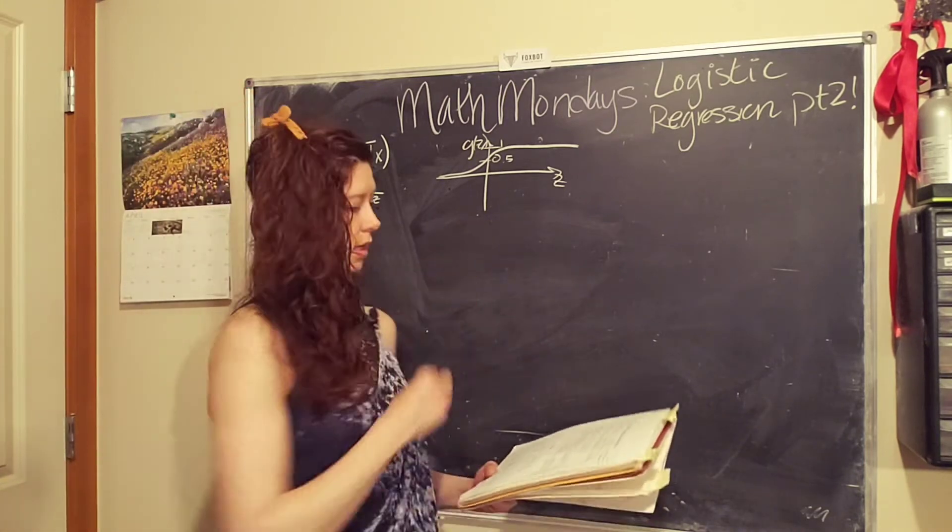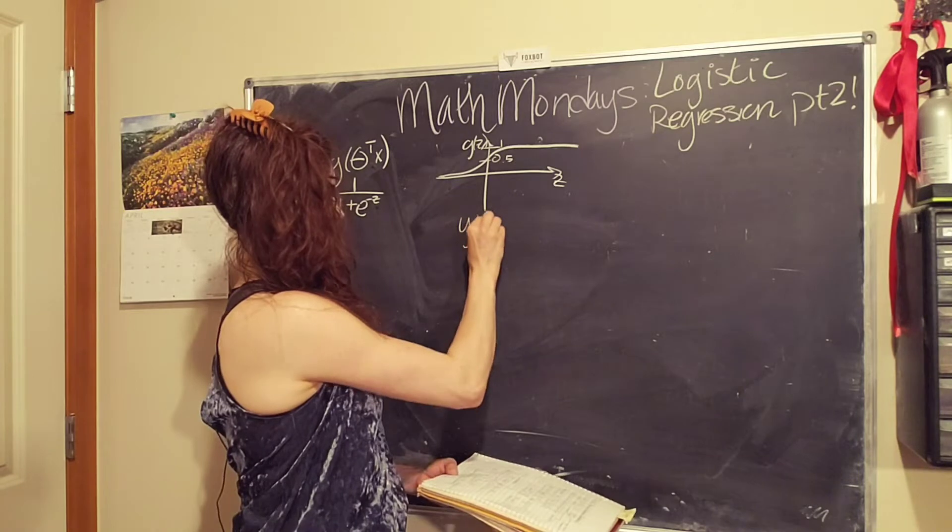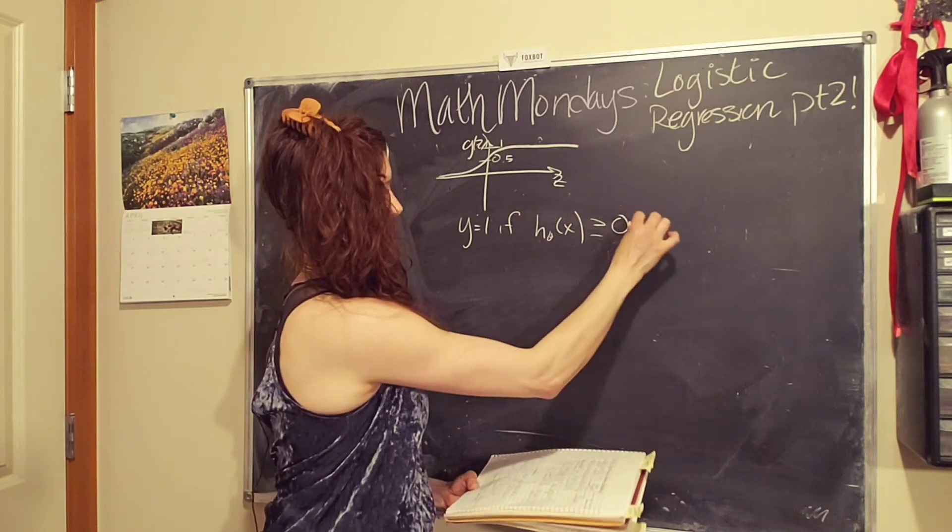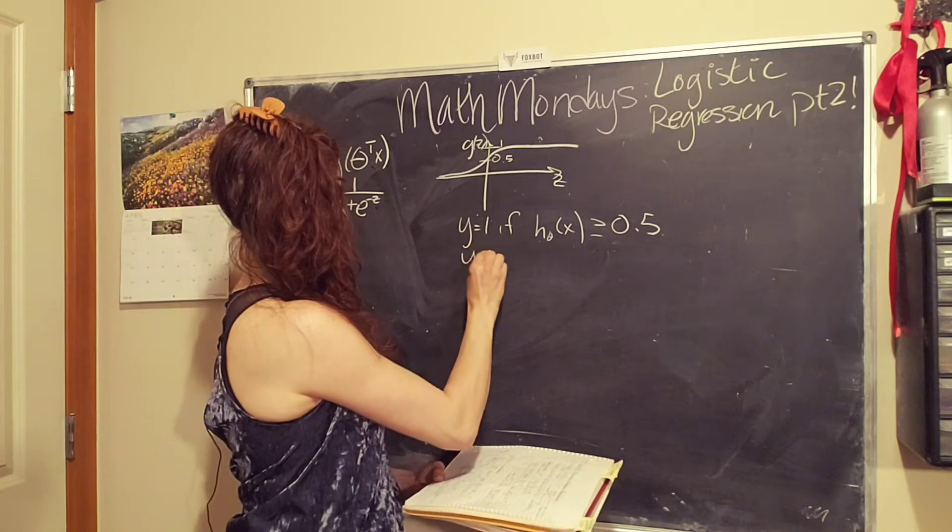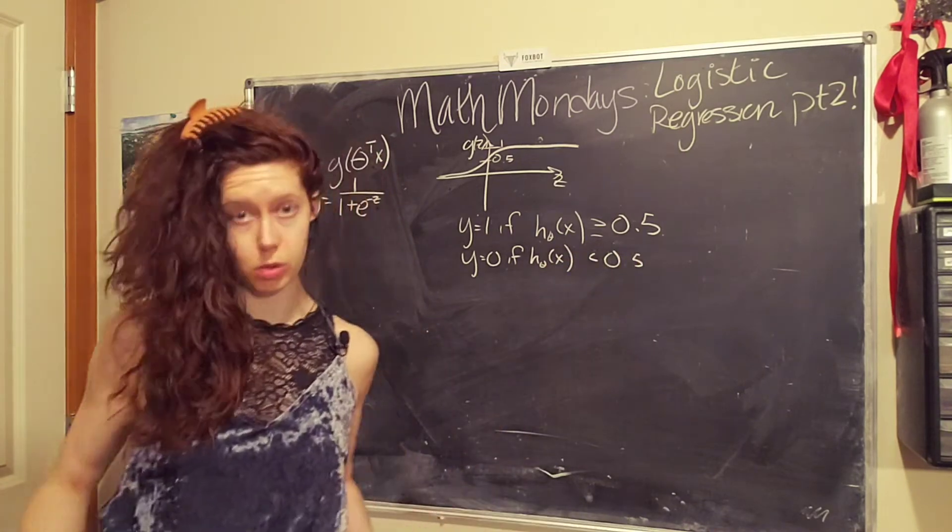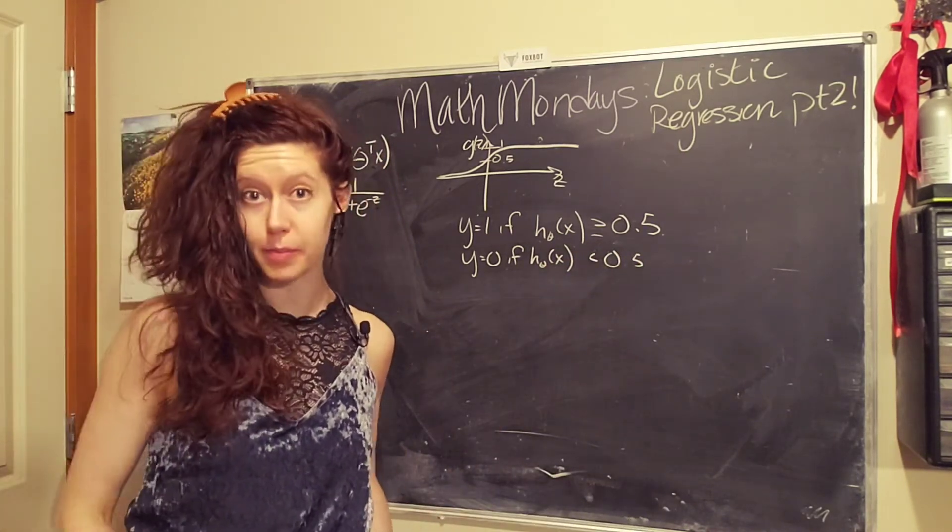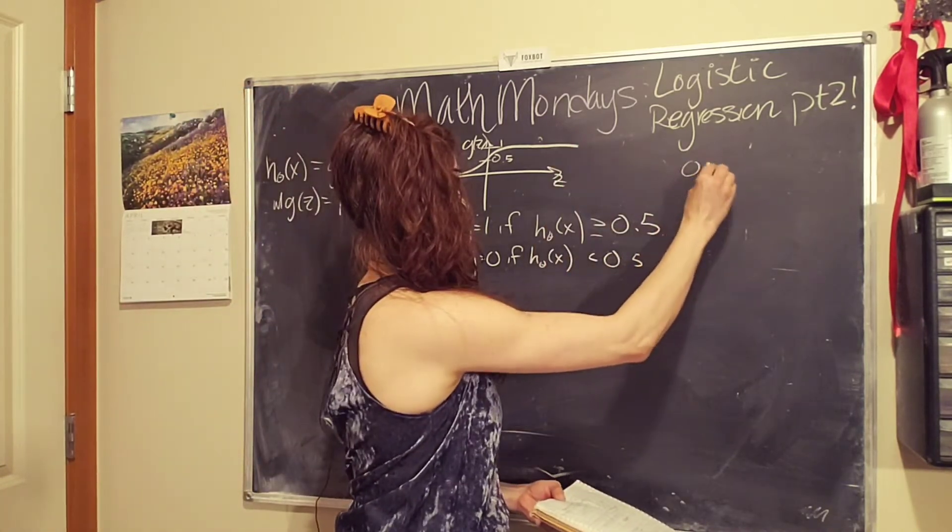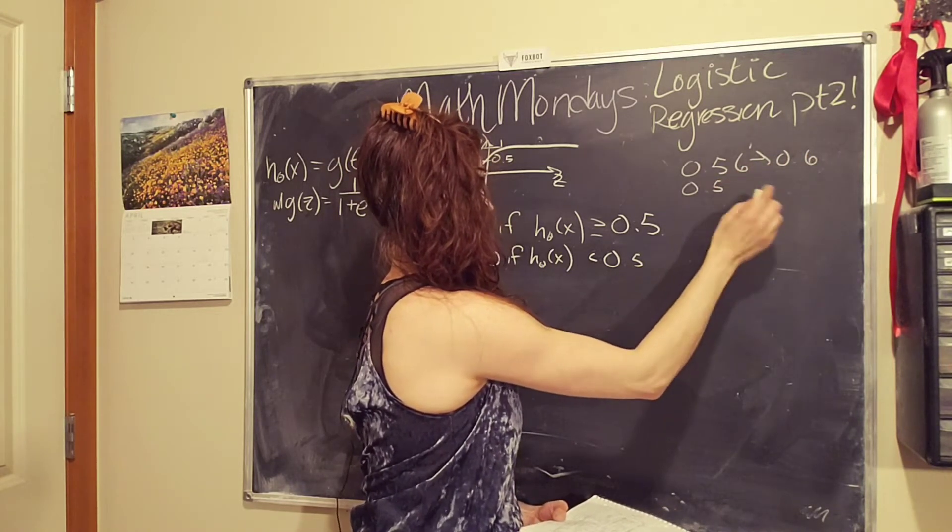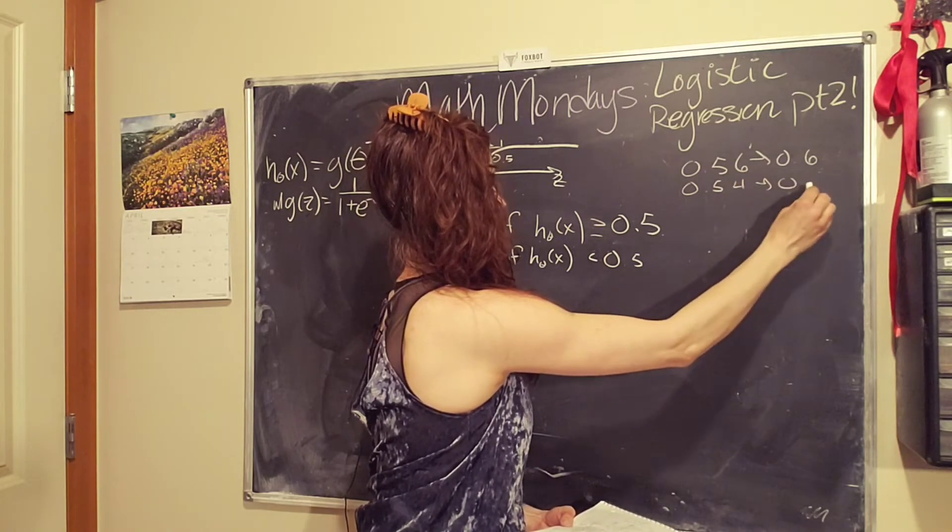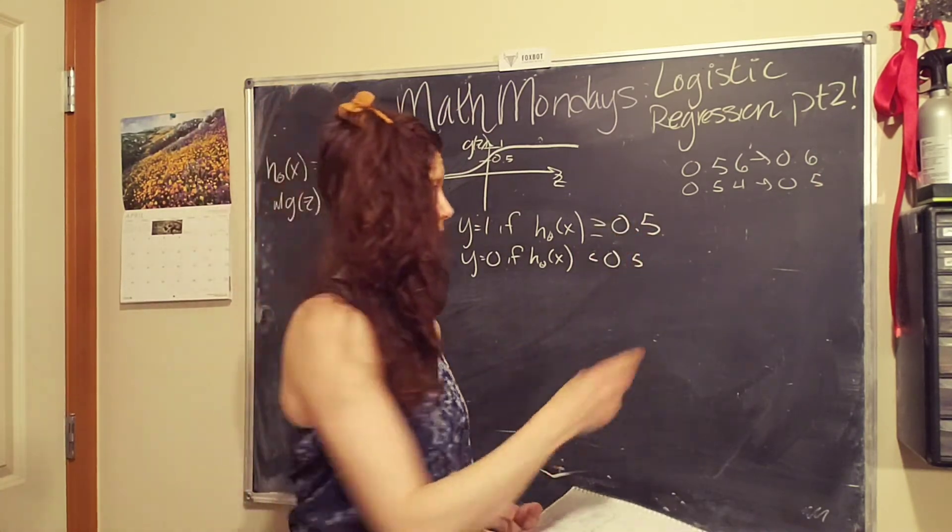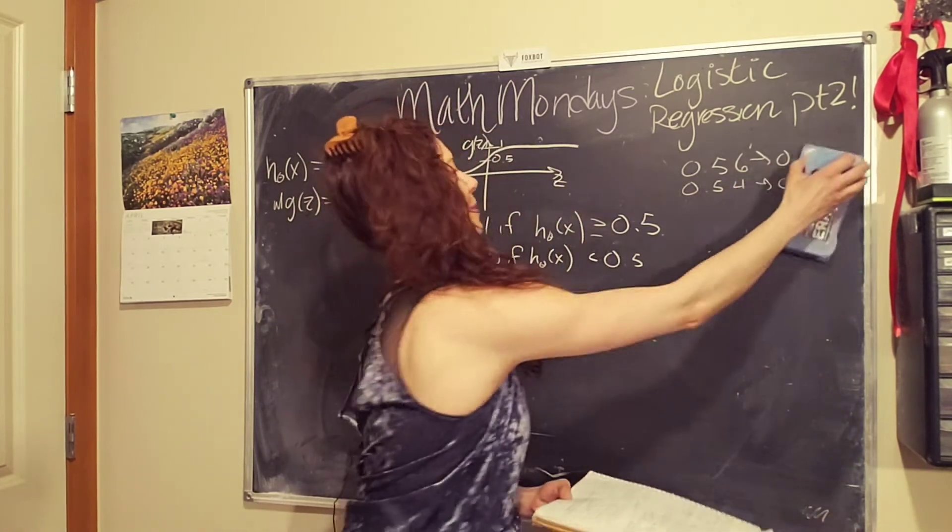So let's say that we predict that y equals one, if h of our hypothesis function is greater than 50%, or 0.5 in decimal form. And we say y equals zero, if our hypothesis function is less than 50%. This seems reasonable, right? This is kind of how we're taught how to round up numbers. Like, for example, if I have 0.56, I can round that up to 0.6. If I have 0.54, I round that down to 0.5. So 5 is the threshold number here. I guess I should have done an example with five, but I hope that helps.